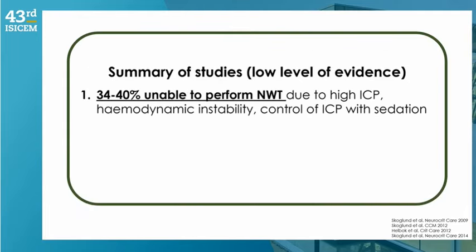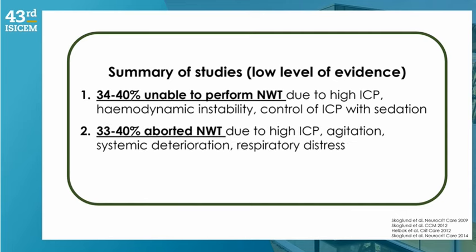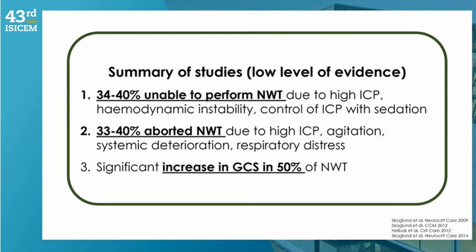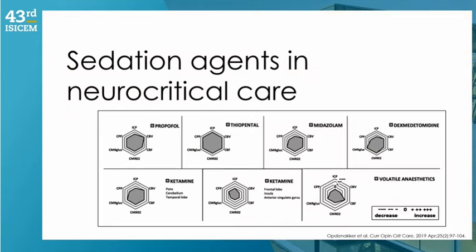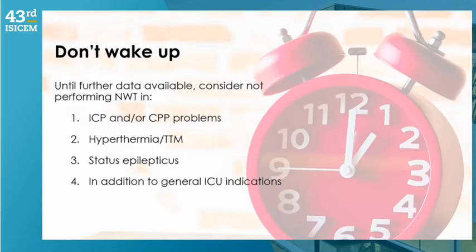Data from Skogel, Gup, and Raymond Helmock show that neurological wake-up tests in brain-injured patients result in blood pressure and heart rate rises, ICP increases, perfusion pressure drops, and differential results in cerebral microdialysis and brain tissue oxygenation. Roughly 30–40% of patients cannot be woken up, another 30–40% of attempts are aborted due to concern, and approximately 50% show GCS improvement. However, few actual neurological deteriorations are detected. Patients not woken include those with intracranial hypertension or during targeted temperature management.